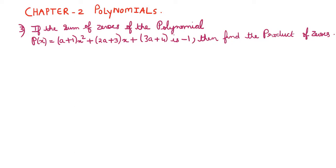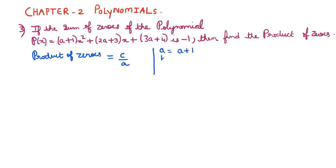The third question: if the sum of the zeros of the polynomial p(x) equals (a plus 1)x² plus (2a plus 3)x plus (3a plus 4) is minus 1, find the product of zeros. The product of zeros formula is c by a. Here a equals a plus 1, b equals 2a plus 3, and c equals 3a plus 4. So product of zeros equals (3a plus 4) divided by (a plus 1).